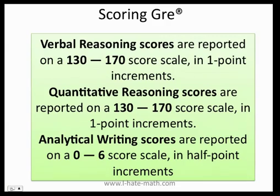The scoring for the new GRE is actually very different from the old one. Now the scores will range from 130 to 170 for the verbal and the quantitative reasoning. For the analytical writing you will have from 0 to 6. Remember, this is going to vary depending on the school — they will ask you for scores between 130 to 170, so the best thing is to always check your school's website to make sure you're targeting the right score.